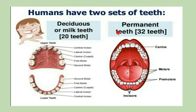The two sets are deciduous and permanent. Deciduous teeth are also called primary teeth, milk teeth, or temporary teeth. Permanent teeth are called secondary teeth. The difference is that primary teeth are 20 in number whereas secondary teeth are 32 in number. They are called deciduous or temporary teeth because they are replaced by permanent teeth.